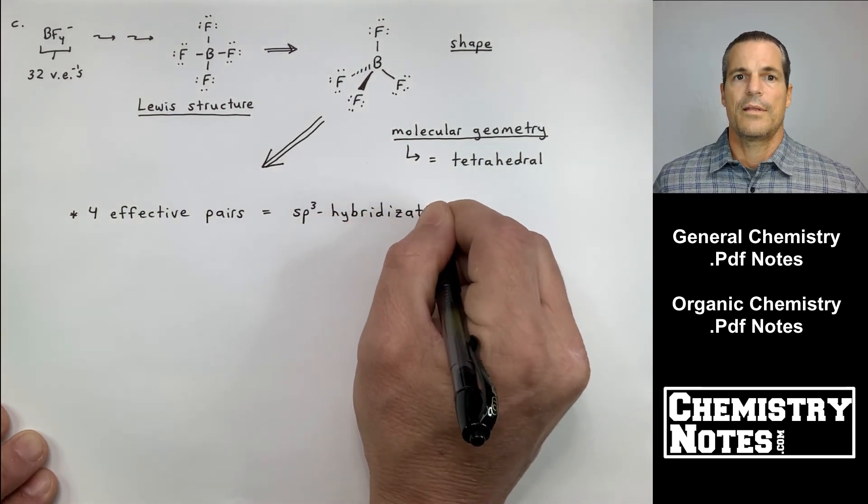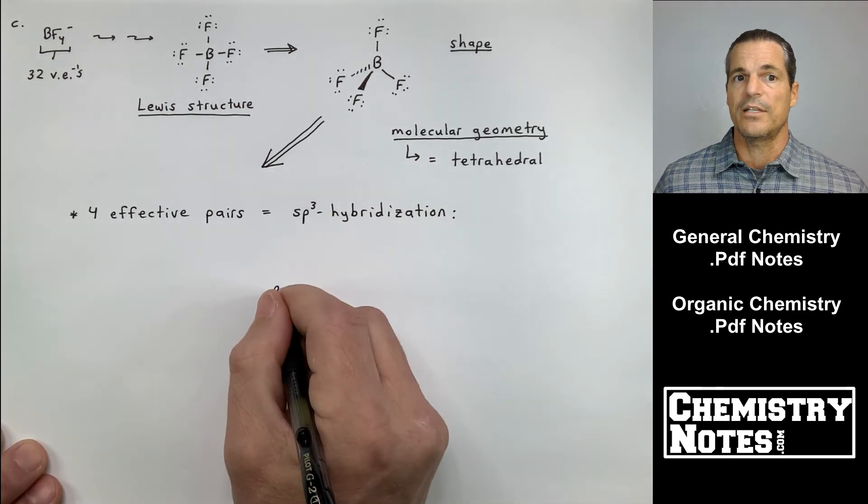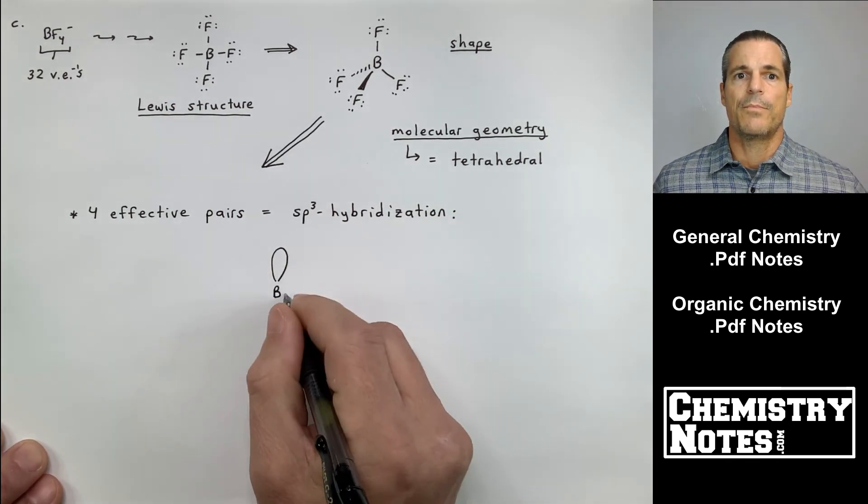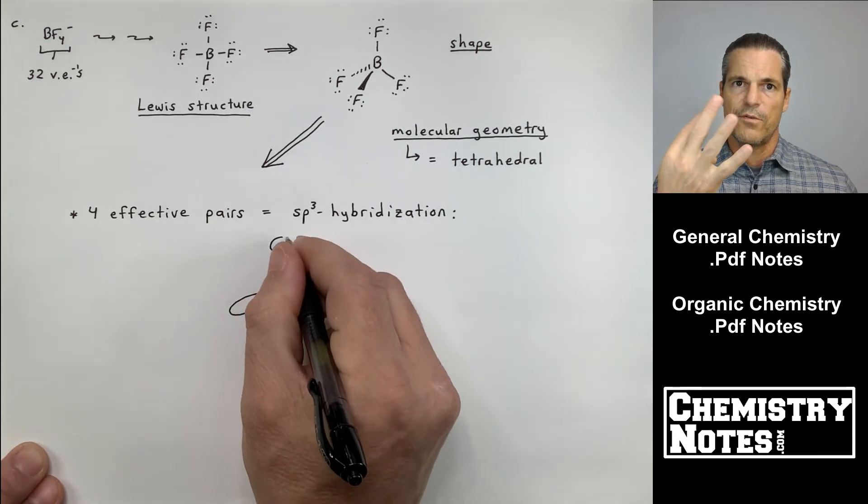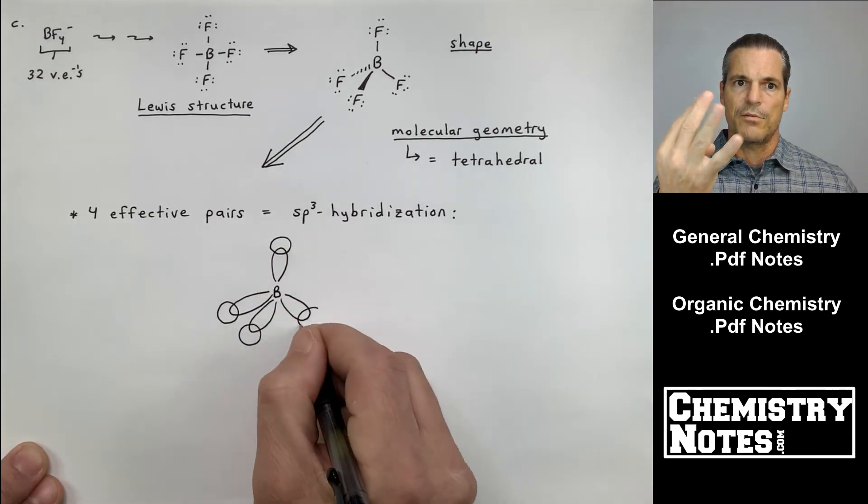So the shape forms a tetrahedron, and the molecular geometry we actually call it tetrahedral because all four of those tetrahedral endpoints are actual atoms. So there's nothing to cover with your thumbs, remember? It's just tetrahedral. So boron has four effective pairs around it. Four effective pairs around boron is S, P1, P2, P3. See the four? S, P1, P2, P3. S, P3.